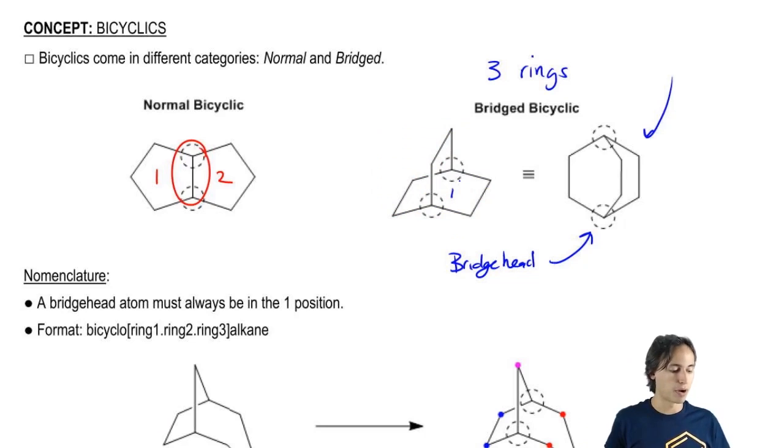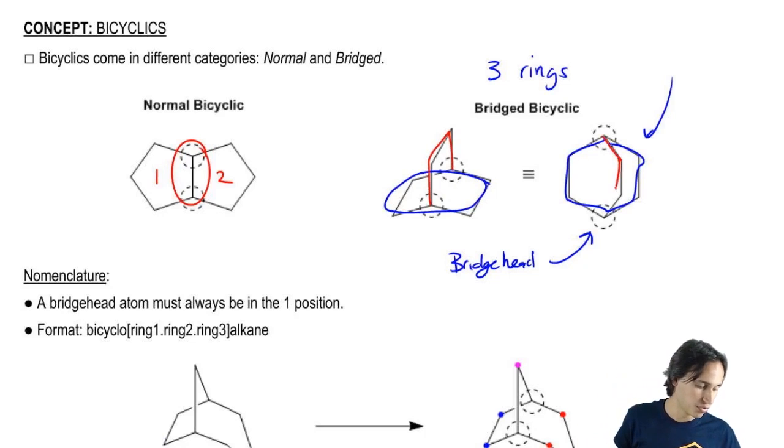Basically the bottom part down here, that's actually a cyclohexane that I've drawn right here. So that would be that blue part right there. And then the bridge, which is the part that comes over the top that I'm drawing in red, would be right here.